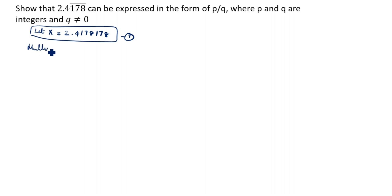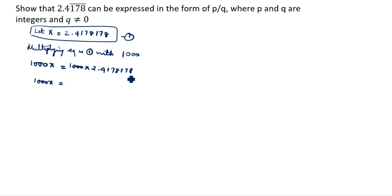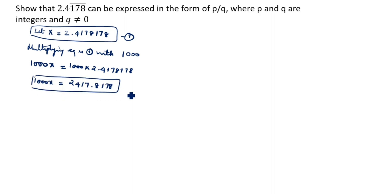Multiplying equation 1 by 1000, because three digits are under the bar, so we write three zeros. 1000x equals 1000 into 2.4178178, which gives us 2417.8178. This is the second equation.